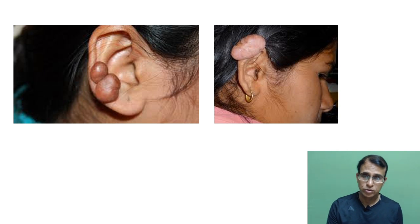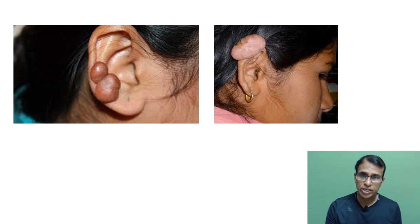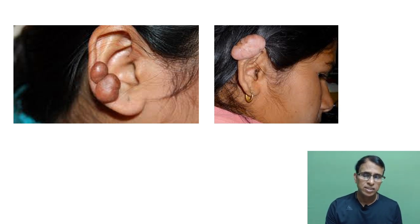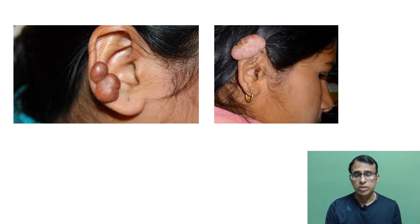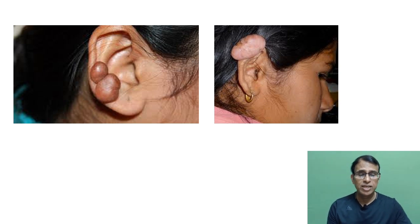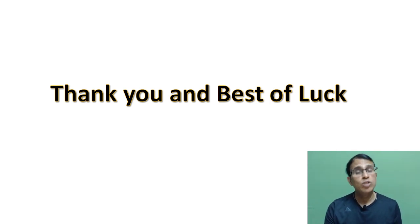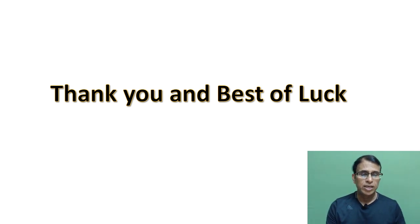Despite all precautions, the recurrence rate is very high for keloids. They can be bilateral, making them even more problematic — especially for young females, for whom it can be cosmetically and psychologically devastating. These are the important conditions of the pinna that are not usually discussed in regular lectures. Most of these can appear as image-based questions in exams. I hope this session was useful; keep watching for other similar sessions. Thank you and best of luck.